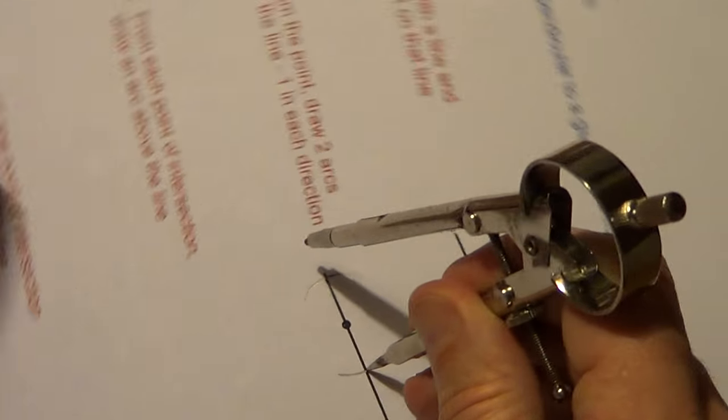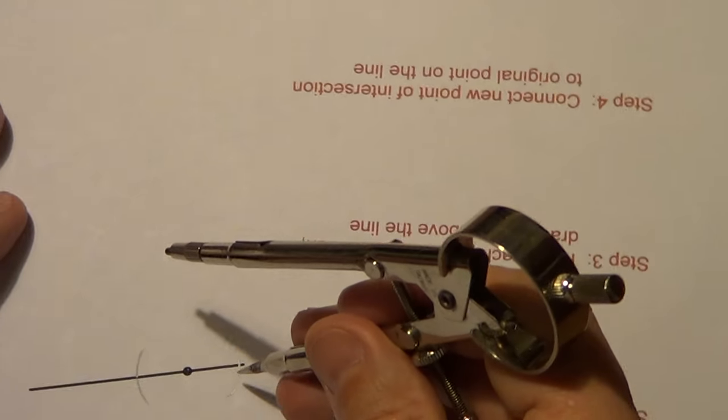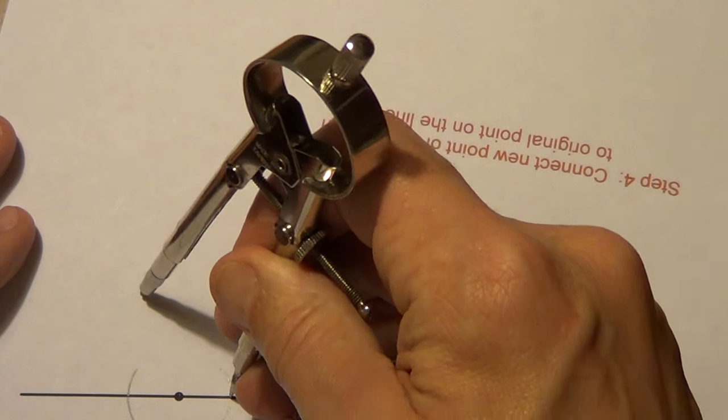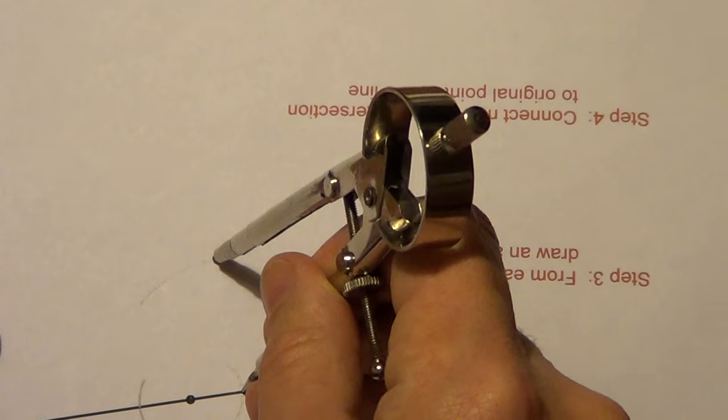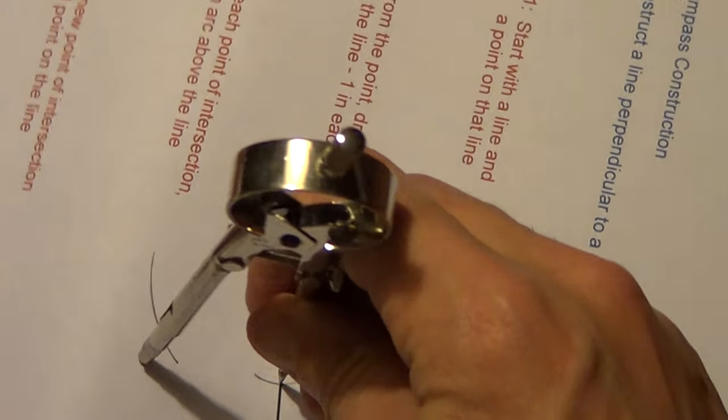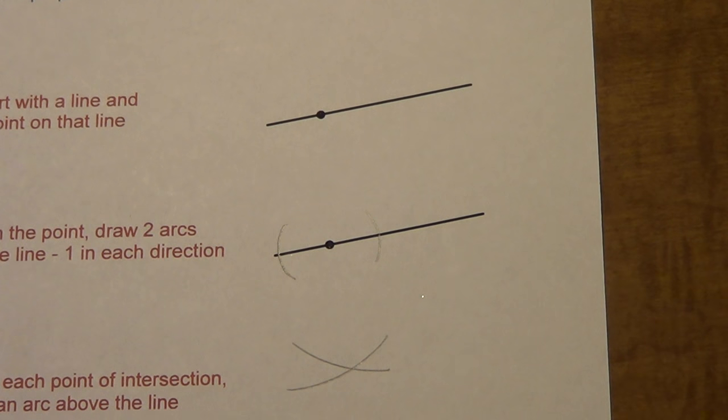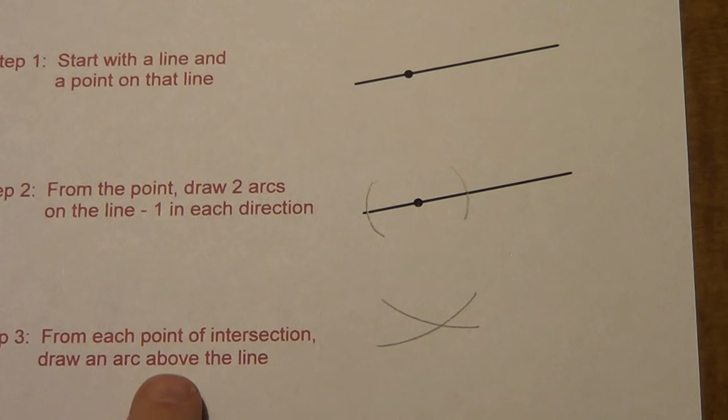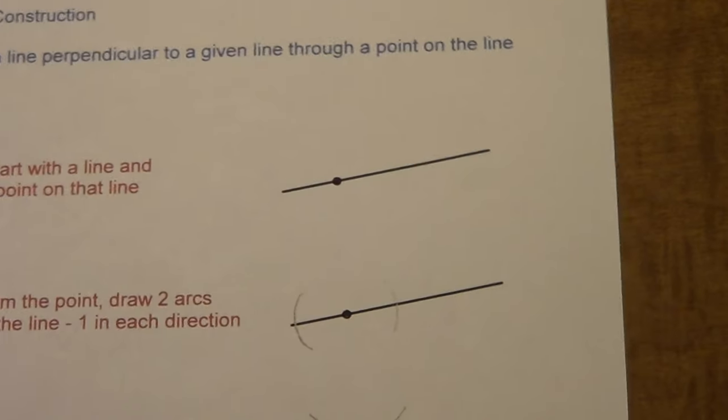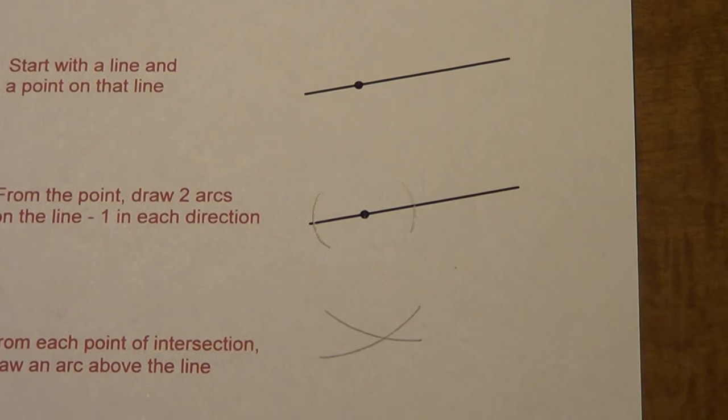Here we go. I'm going to actually do it down below, just because this stuff is in the way. Draw an arc. I'm going to try to make that a little bit darker so you can see it better on the video, and I'll zoom in here in a second. Then we go to the other point of intersection right here, and we draw that arc. Let me zoom in a little bit. Like I said, I know this says above the line, but you can do it below, and if you turn your paper upside down, it looks like it's above, so it's the same thing.